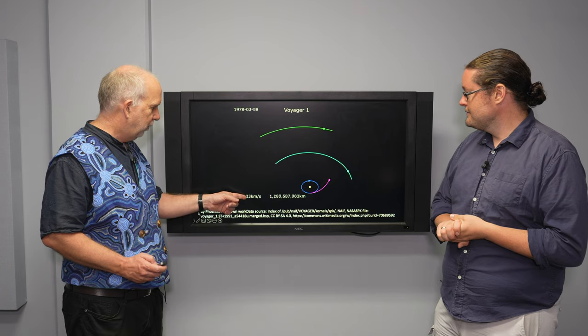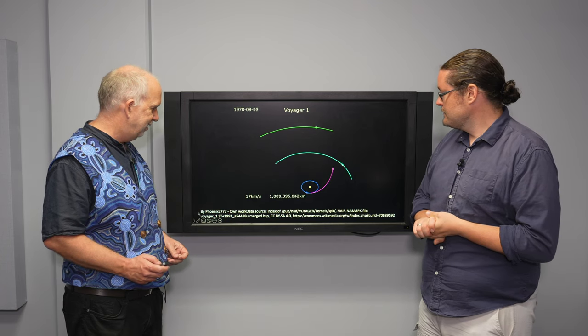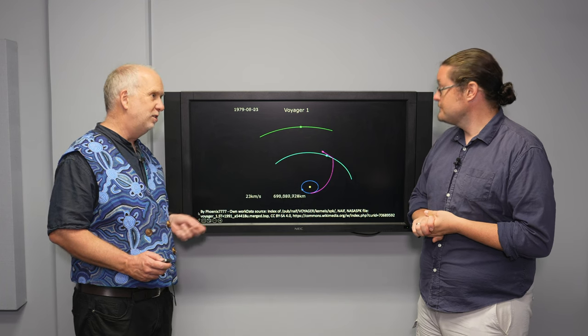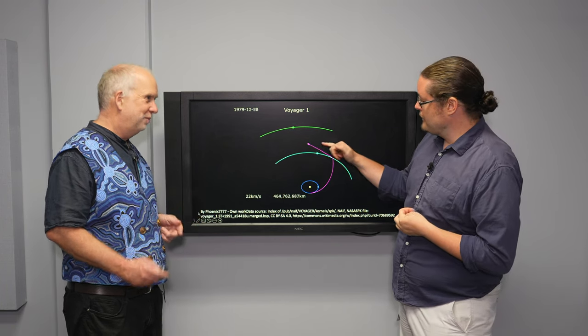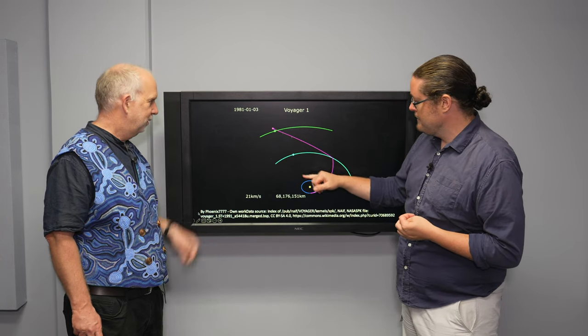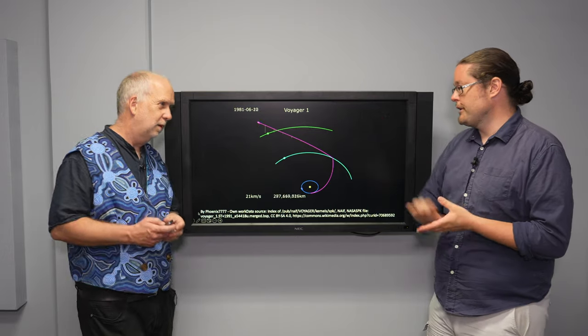Yeah, so you see it's slowing down as it goes out: 19, 18, 16, 15 kilometers a second, 13, and then it jumps up to 24 as it went past. And we slow a little bit down, but we don't slow nearly as much in the solar system. We're way further away from the Sun now. Pick up a little bit more speed and off we go.